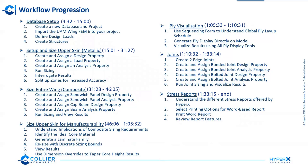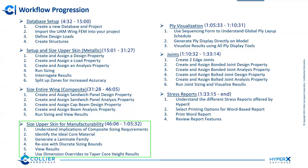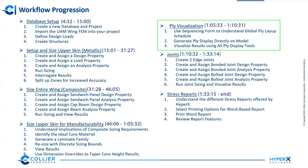Here's a quick overview of how this workflow will progress. We're going to create a brand new HyperX database and project, bring in the UAM wing FEM from scratch, then do some sizing trades — starting with metallic to size the upper skin, then switching to composite for mass comparisons. From there we'll work on manufacturability constraints, building towards a set of global plies we can visualize on the wing using the HyperX viewport.